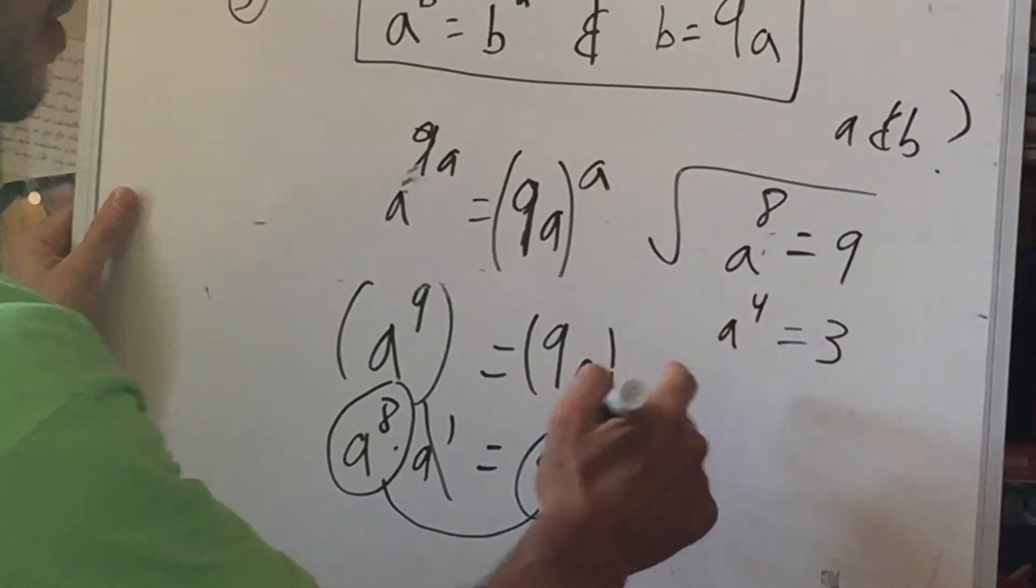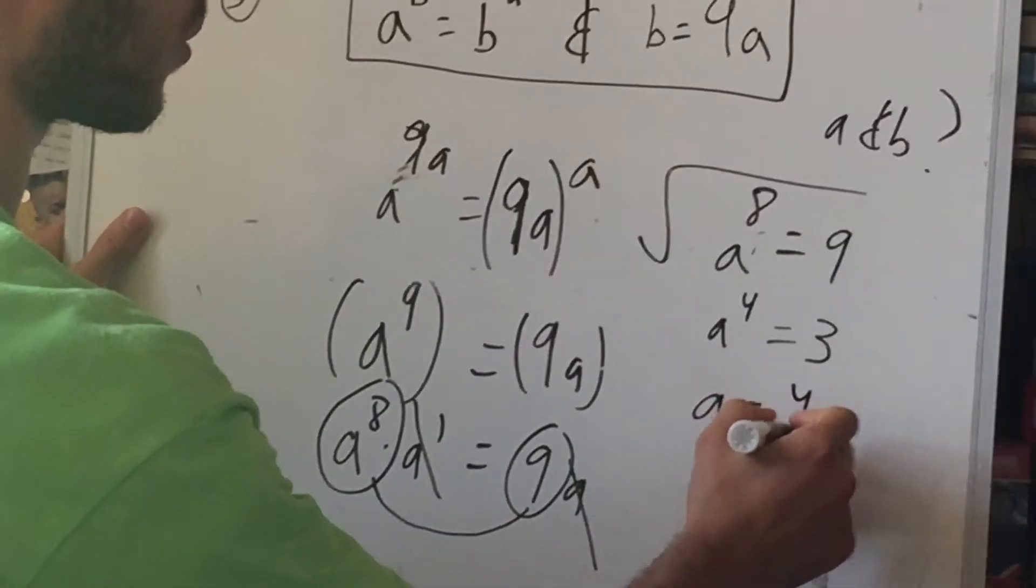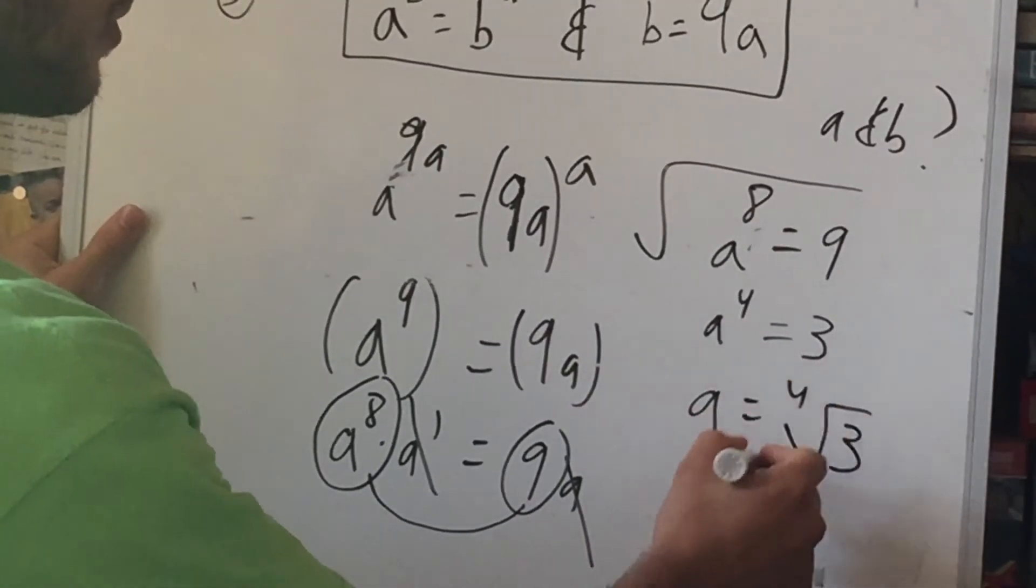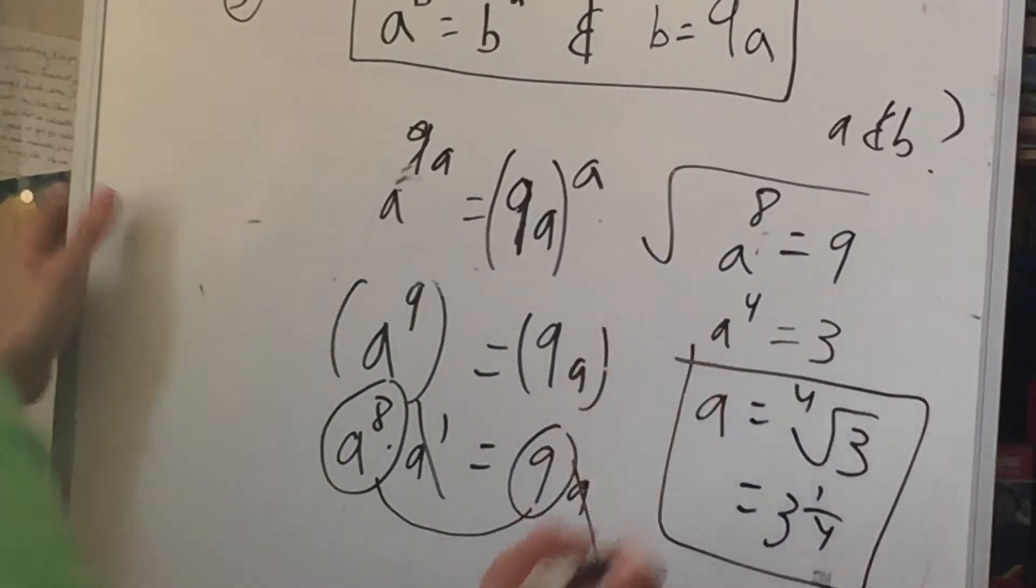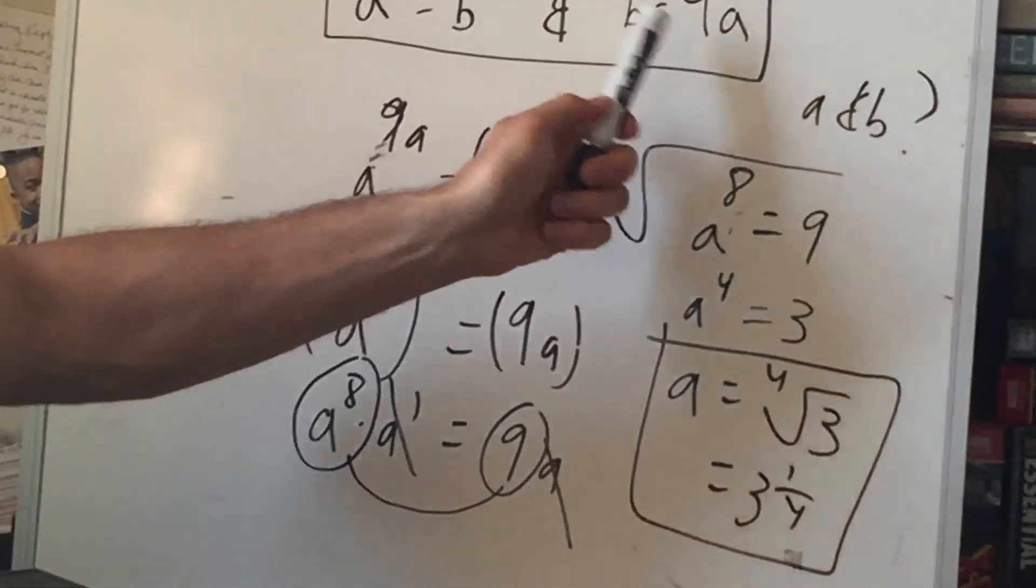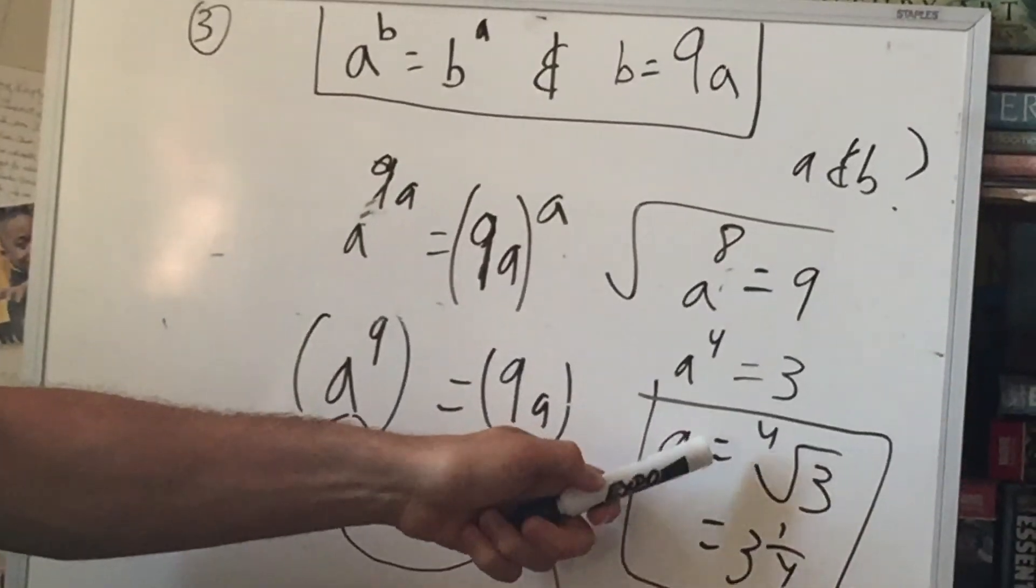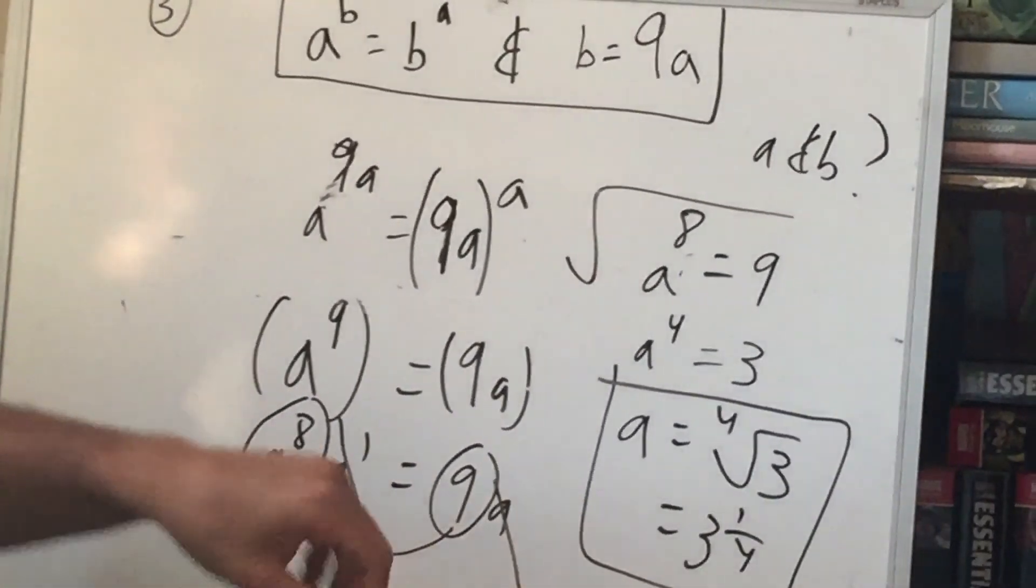So we get this part. And from here we can just see that A must be the 4th root of 3. Or you can write it as 3 to the 1/4th, whichever you prefer. And from here you can plug in this. So B would be 9 times whatever this is.